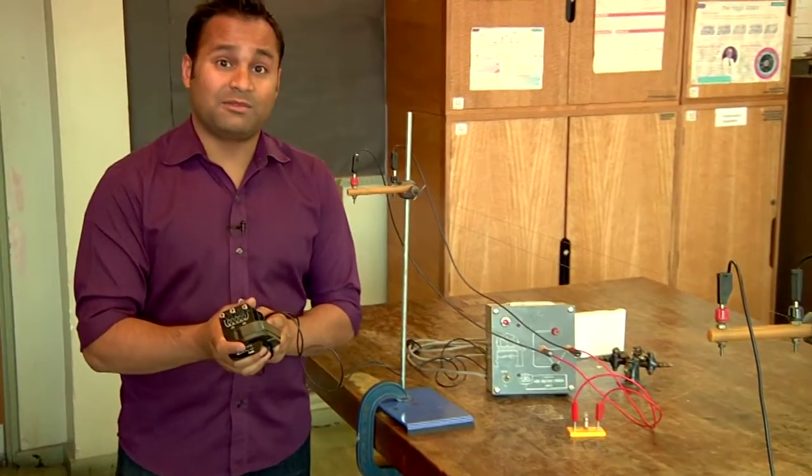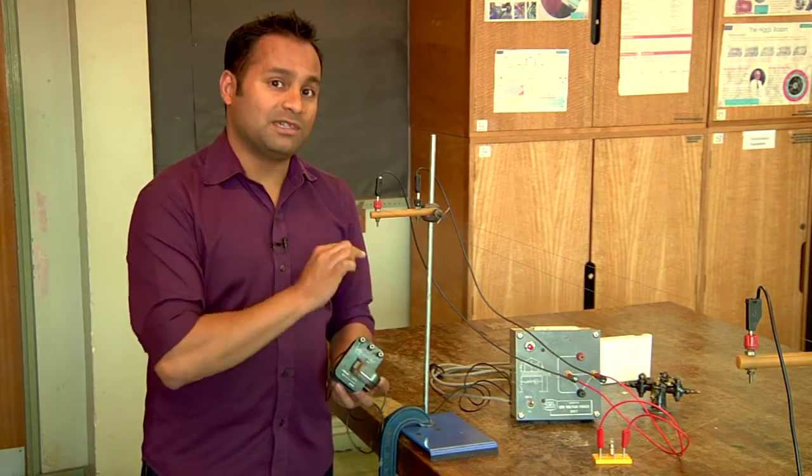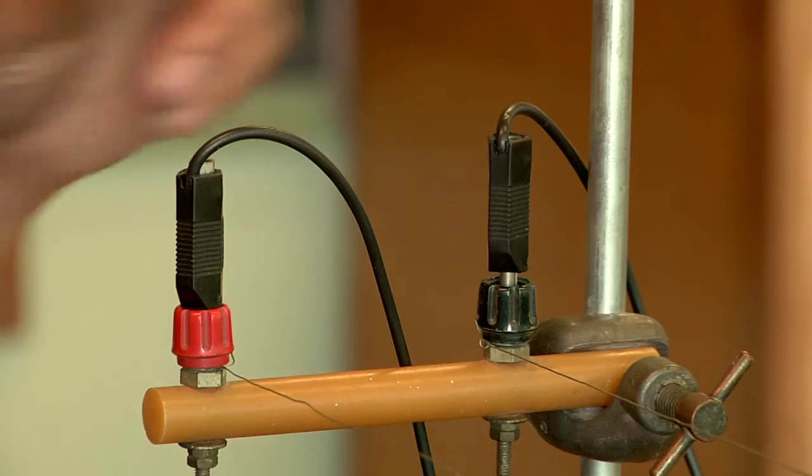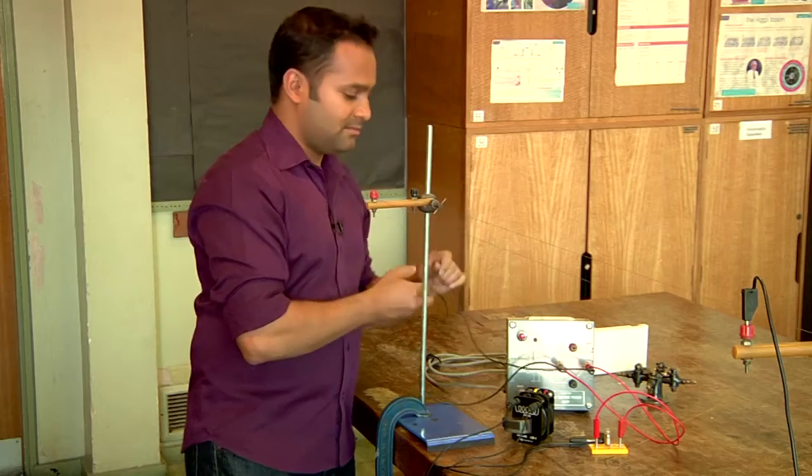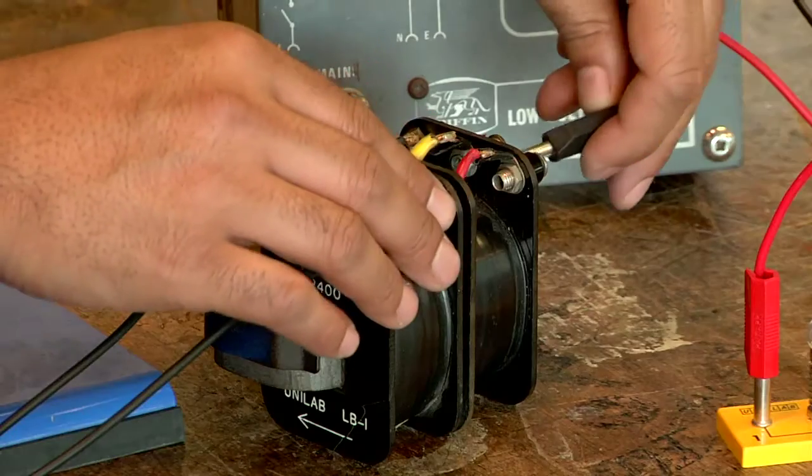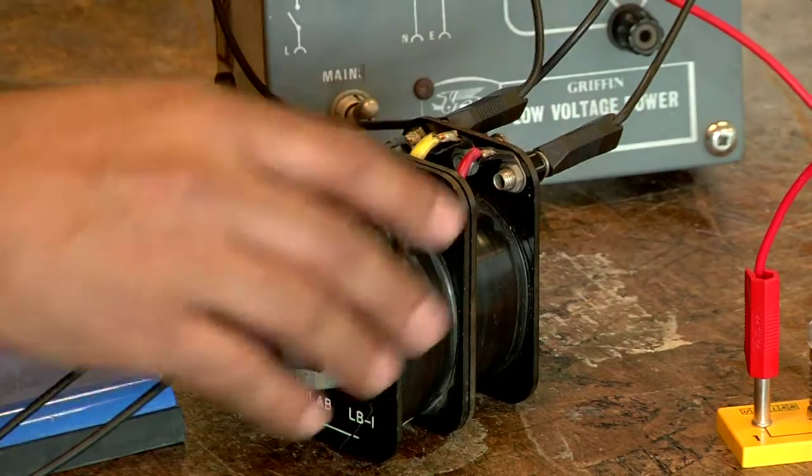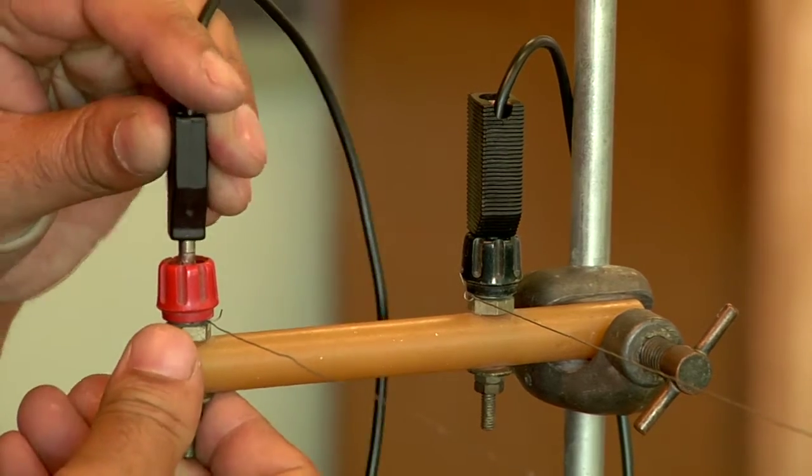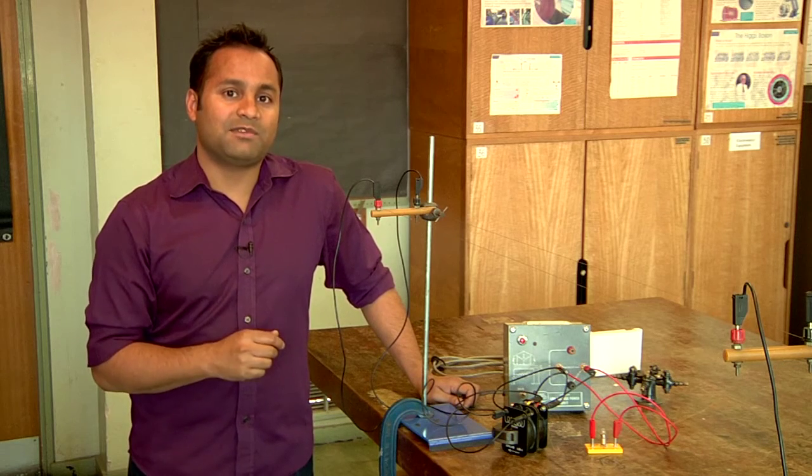I've got a transformer here with a turns ratio of 20 to 1. I'm going to use it to step up the voltage from the power supply. I've got an identical transformer at the other end that I'm going to use in reverse to step the voltage back down.